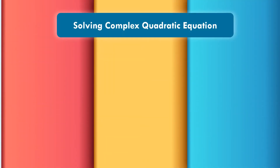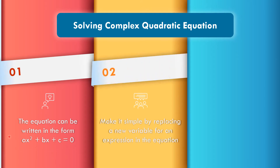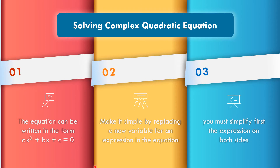What are the different steps in solving a complex quadratic equation? First, the equation can be written in the form Ax² + Bx + C = 0. Second, make it simple by replacing a new variable for an expression in the equation. Third, simplify the expression on both sides.